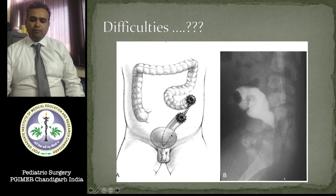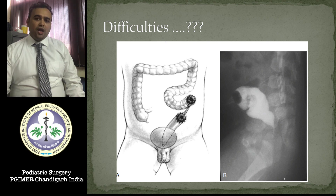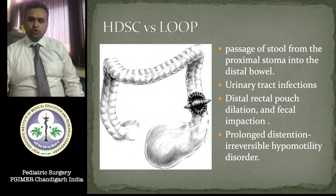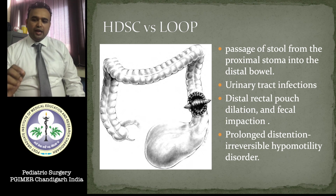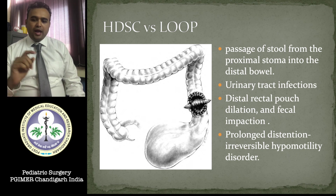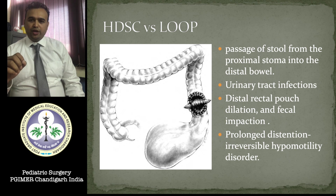Preparing a pull-through will be difficult in subsequent surgery, as also seen on the distal colostogram X-ray. Making a loop stoma is easier than SDSC, but passage of stools from the proximal to distal stoma can lead to recurrent urinary tract infections if there is a fistula. Also, the distal rectal pouch gets dilated with fecal impaction and there can be an irreversible hypermotility disorder.